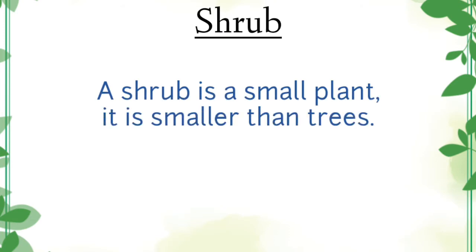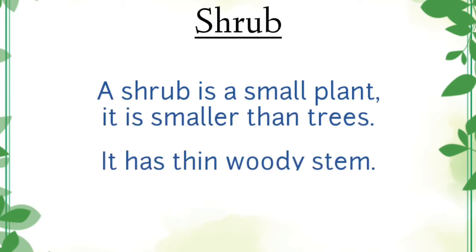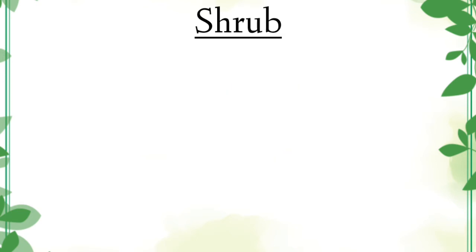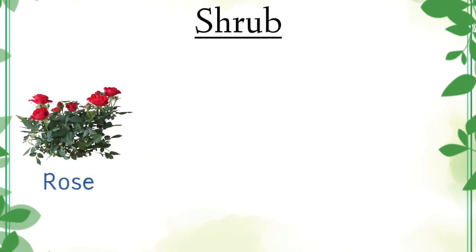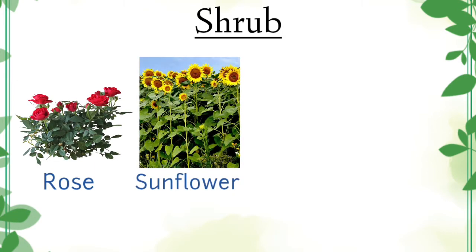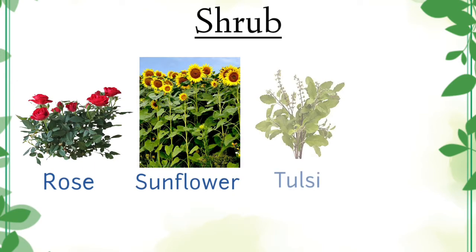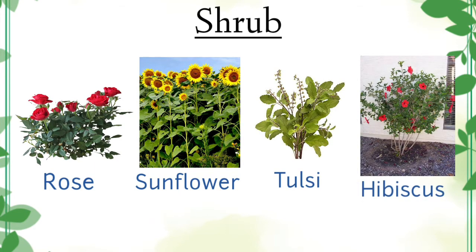Shrub. A shrub is a small plant. It is smaller than trees. It has a thin woody stem. Examples of shrubs are rose, sunflower, tulsi, hibiscus, etc.